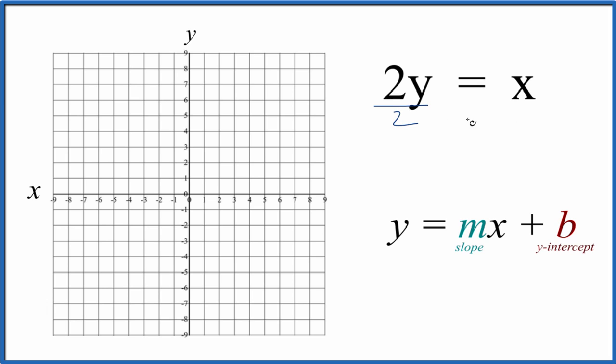Why don't we just divide both sides by 2 like this? 2 over 2 is 1, so we just have 1y. That's y equals x over 2. We don't have b, we could just call b 0 like this. So now we have the right format.